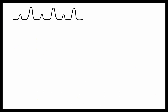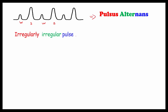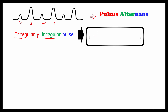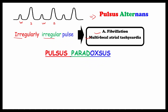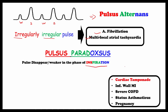Let's talk about some bonus pulses. In pulsus alternans, we see weak pulse, strong pulse, weak pulse, strong pulse coming in alternation. Next is irregularly irregular pulse, which happens in atrial fibrillation and multifocal atrial tachycardia. Last is pulsus paradoxus — a pulse that weakens or disappears during inspiration — which occurs in cardiac tamponade, inferior wall myocardial infarction, severe COPD, status asthmaticus, and even pregnancy.